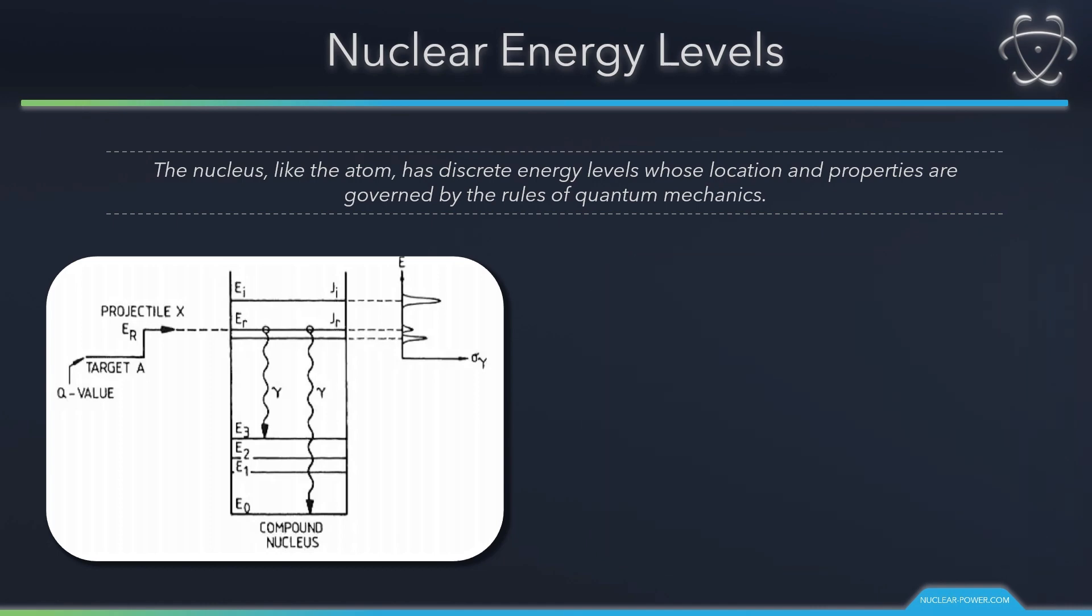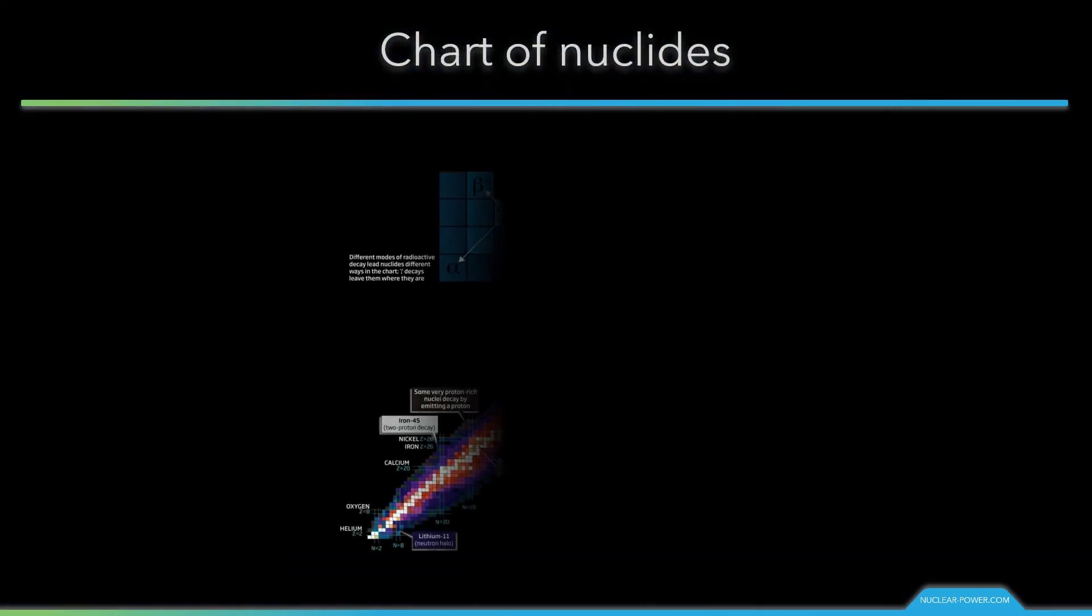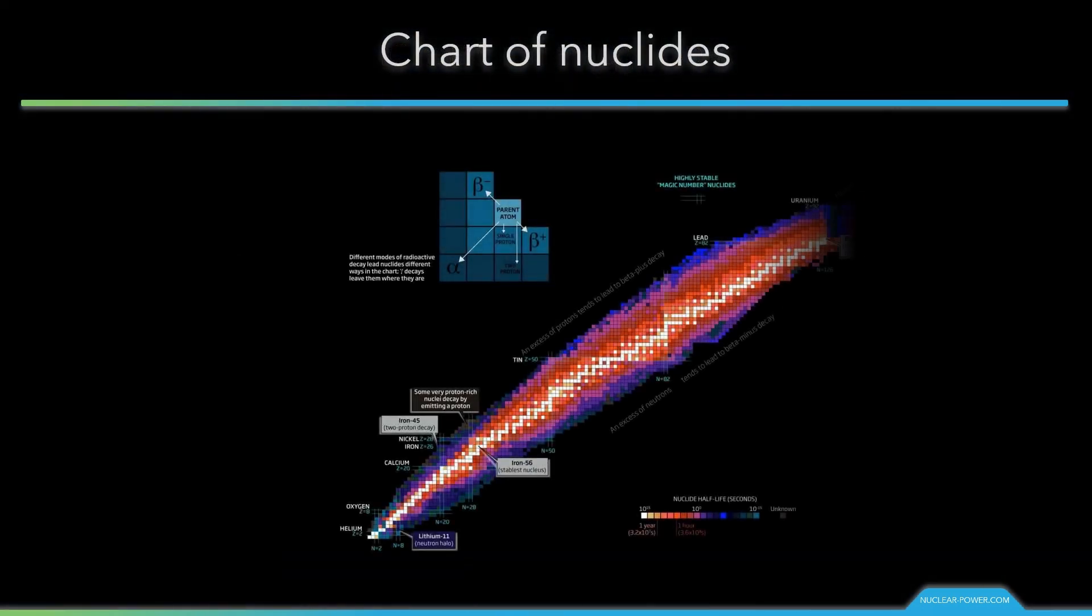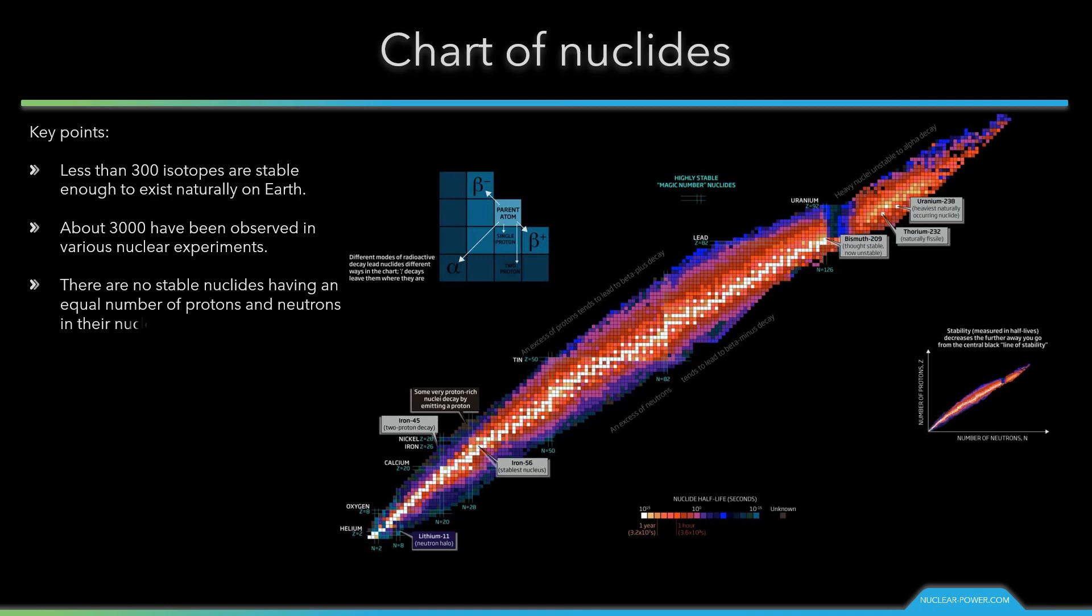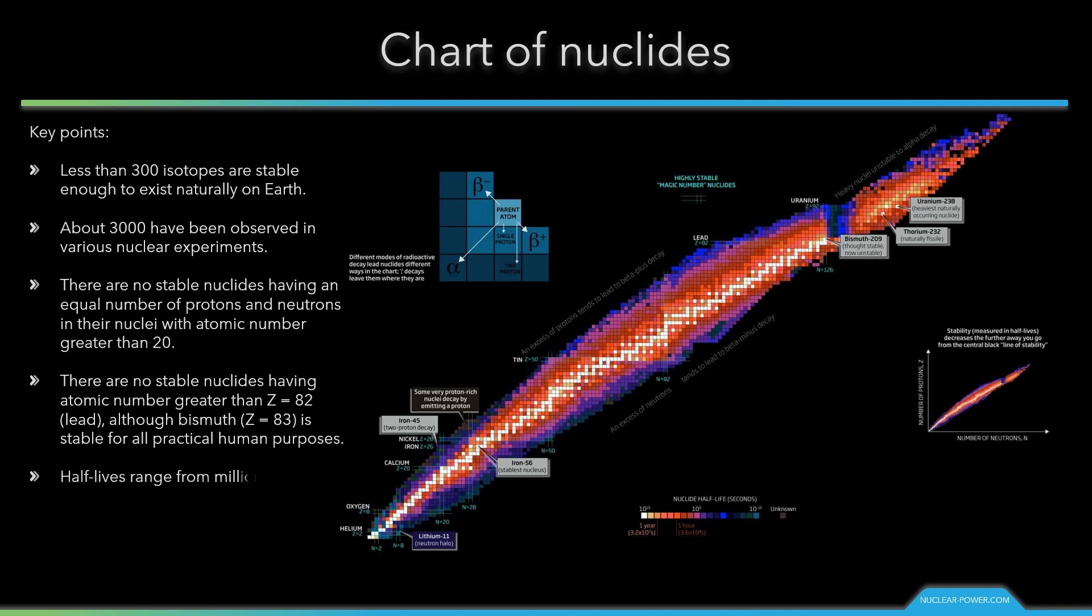Here are key notes from the nuclide chart. There are less than 300 isotopes stable enough to exist naturally on Earth. About 3,000 have been observed in various nuclear experiments. There are no stable nuclides having an equal number of protons and neutrons in a nuclei with atomic number greater than 20. There are no stable nuclides having atomic number greater than 82.